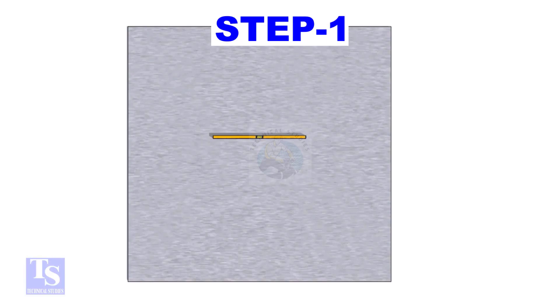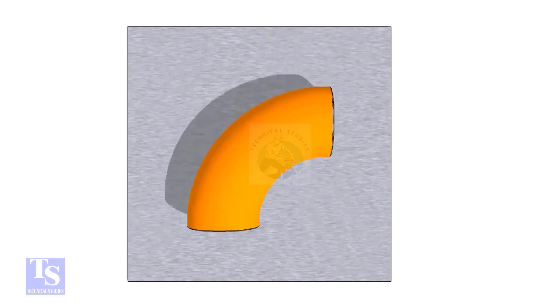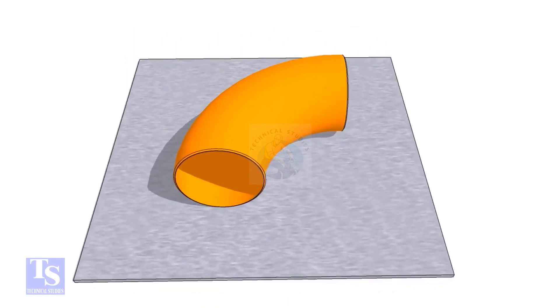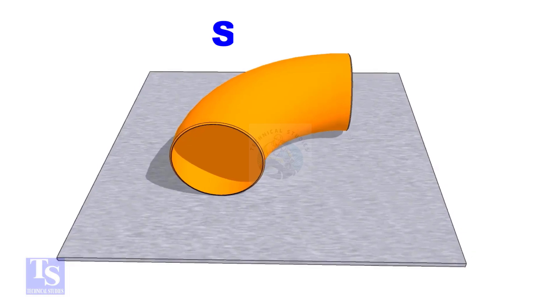First of all, choose a leveled plate and put the elbow on it. Check the outer diameter of the elbow.